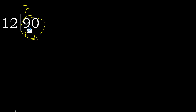Subtract: 90 minus 84 gives remainder 6. Next, 6 is not a full divisible number, so we complete with 0. Always complete with 0. Write 0 with a decimal point.